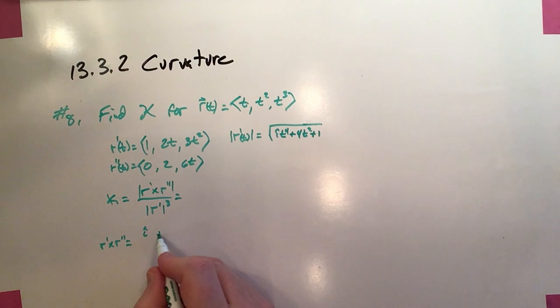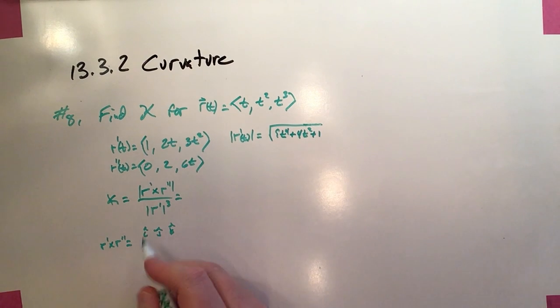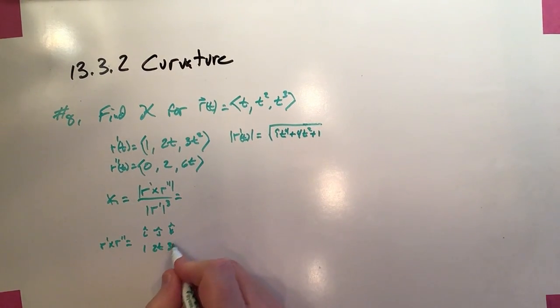r prime crossed with r double prime is going to be i, negative j, k. And again, the first vector is r prime. That's 1, 2t, and 3t squared. And the second vector is r double prime: 0, 2, and 6t. And we want to work out the determinant of this matrix.